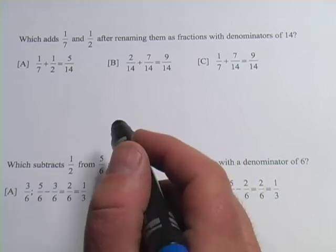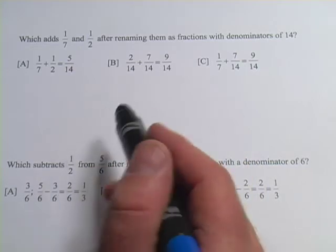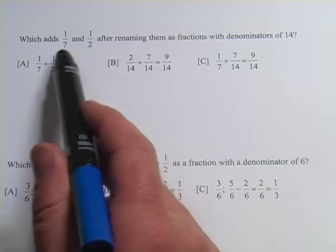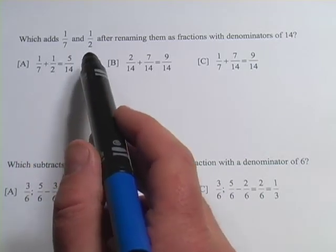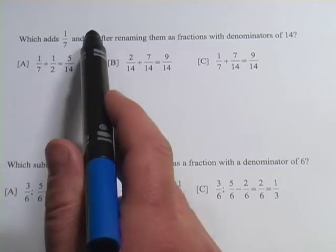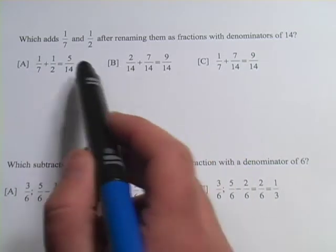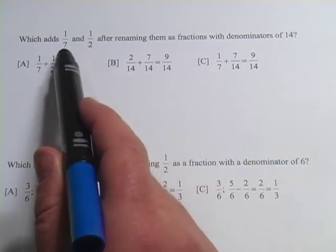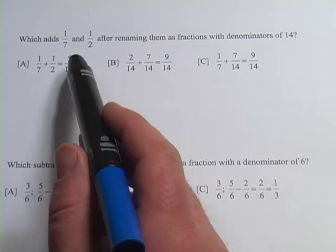In these problems, we're learning how to add fractions that have different denominators. The numbers on the bottom are different. And when the denominators are the same, you just add the number across the top and you get an answer. But when the denominators are different, you can't just simply add those.